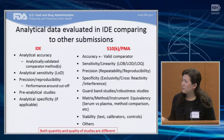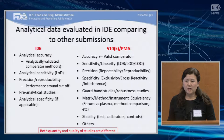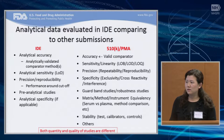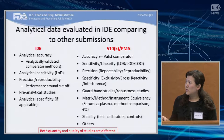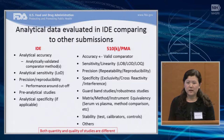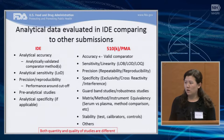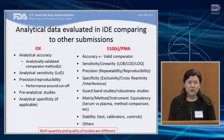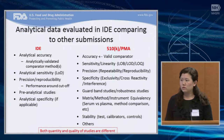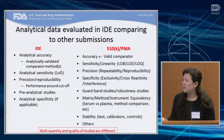When you conduct the IDE studies, there will be challenges. In the accuracy studies, there may be a lack of comparator method or reference method, but normally we accept an analytically validated comparator method. If you can justify why the reference method is not available and why the comparator method is validated and appropriate, you can discuss this through the pre-submission process and we will give you comments and suggestions. For the precision study, it's important to use samples around the cutoff because we want to see performance for those difficult-to-test samples near the cutoff regions.